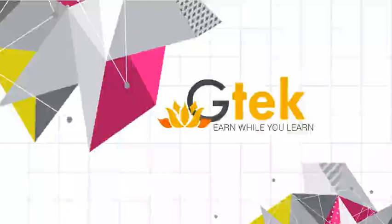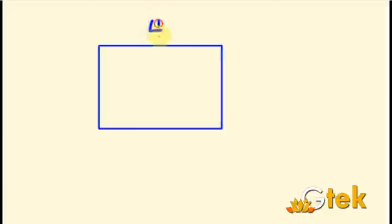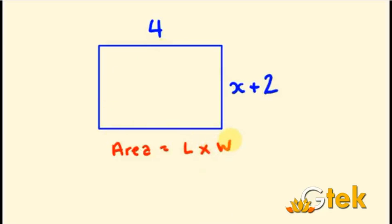Welcome to GTIC. Now we are going to see about expanding and simplification of brackets in algebra. Let us consider a rectangle of length 4 and width x plus 2. Let us discuss how to solve this problem. My area is equal to L into W, that is length into width. So my length is 4 and my width is x plus 2, so I am writing it inside the brackets.